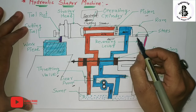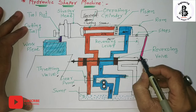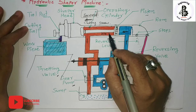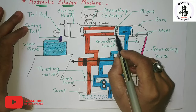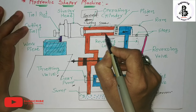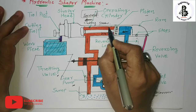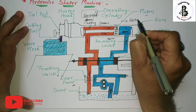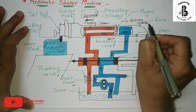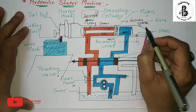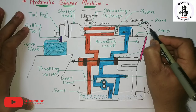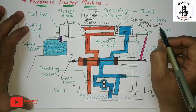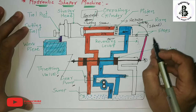The oil under high pressure is now pumped to the left side of the piston, causing the ram to perform the return stroke. This reverse pressure from the left side produces what is called the backward or return stroke. In any shaper machine, the return stroke is an ideal stroke, so a quick return mechanism is required to increase productivity.